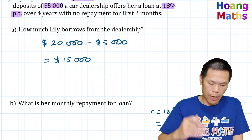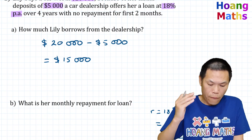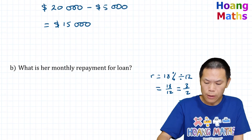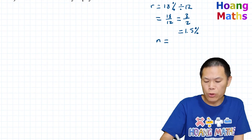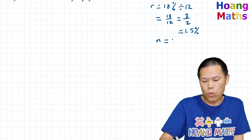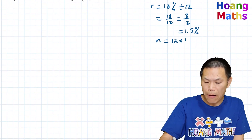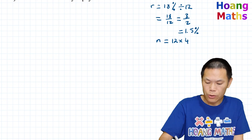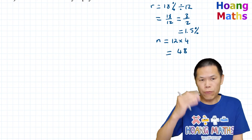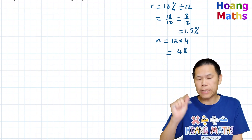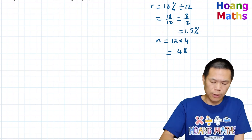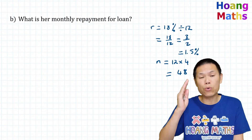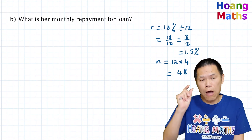The loan term is four years, so the number of months is 12 times 4, which equals 48 months. Remember that Lily doesn't make any payment for the first two months.